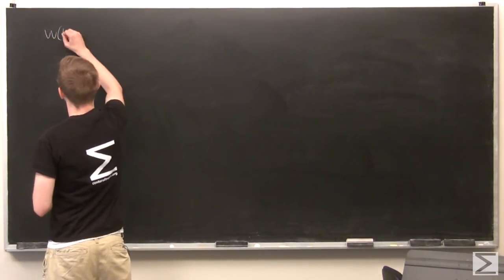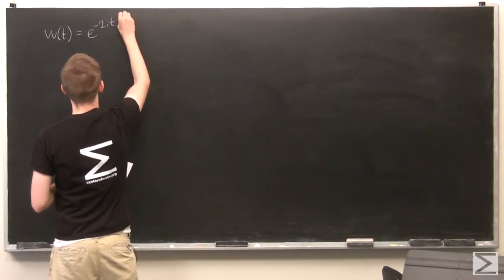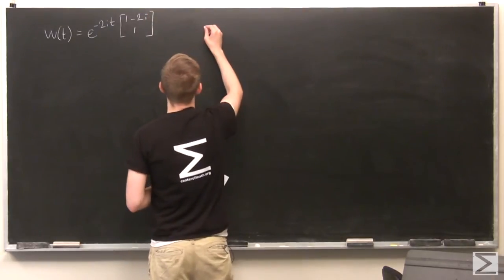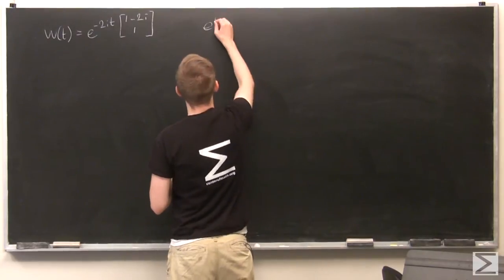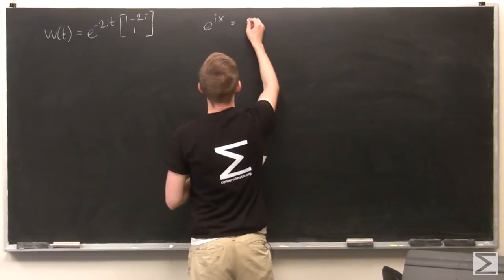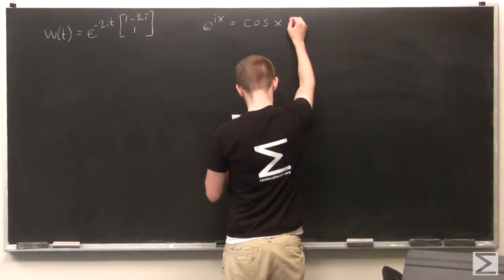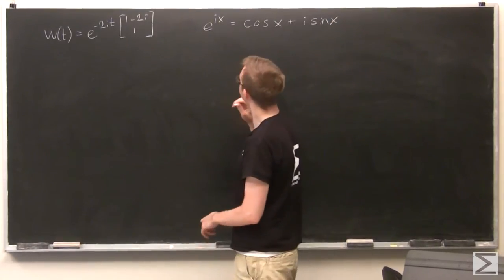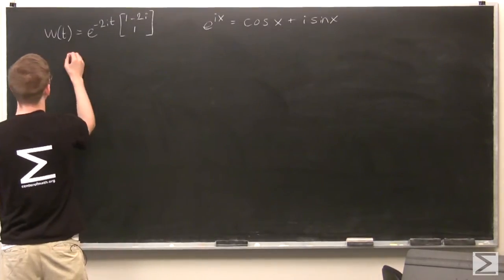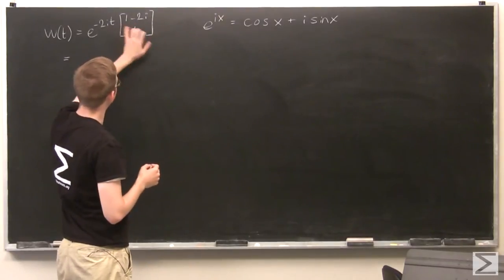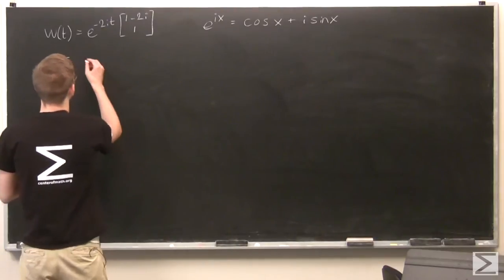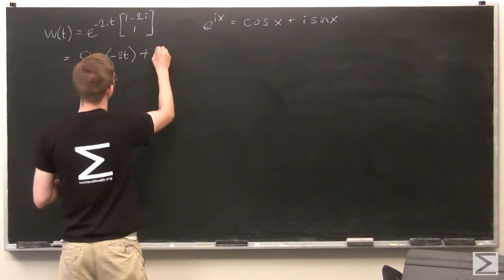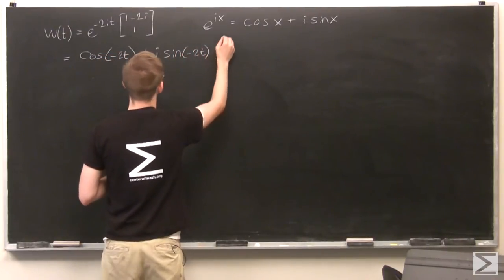So I'm going to take this on the other board. We have w(t) equals e^(-2i*t) times the vector [1-2i, 1]. And if you remember Euler's formula, that is e^(ix) equals cosine of x plus i*sine of x. I'm going to substitute that in. Here my x is -2t, so that'll be cosine(-2t) + i*sine(-2t), all times that same vector.